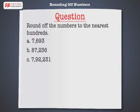Round off the numbers to the nearest hundreds. A. 7,693 B. 87,236 C. 7,92,231